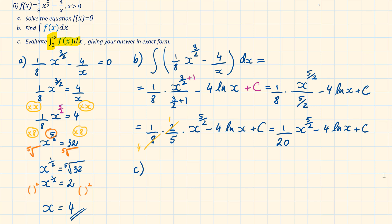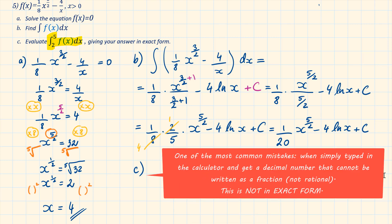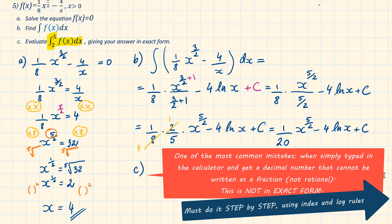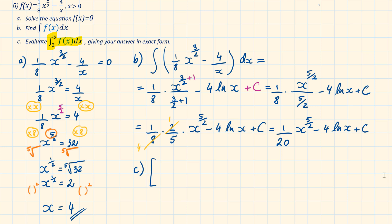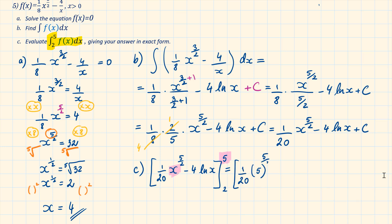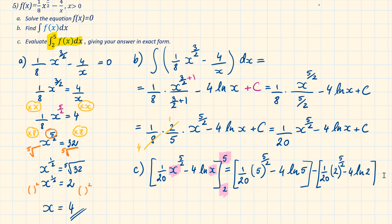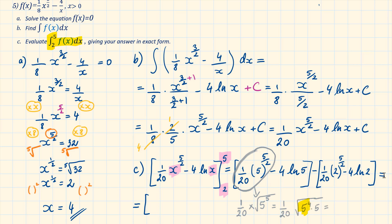Part C: evaluate this integral from 2 to 5, giving your answer in exact form. A common mistake is to type this into a calculator and get a decimal number — if that decimal cannot be written as a fraction, it is not exact form. To get the exact form, we must work step by step using the correct power and log rules. Using the result from Part B and applying the limits, we have 1 over 20 times x to the power of 5 over 2 minus 4 ln x evaluated from 2 to 5. Substituting 5 for x: 1 over 20 times 5 to the power of 5 over 2 minus 4 ln 5. Substituting 2 for x: 1 over 20 times 2 to the power of 5 over 2 minus 4 ln 2.